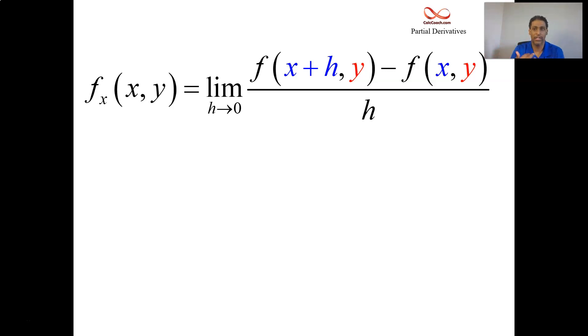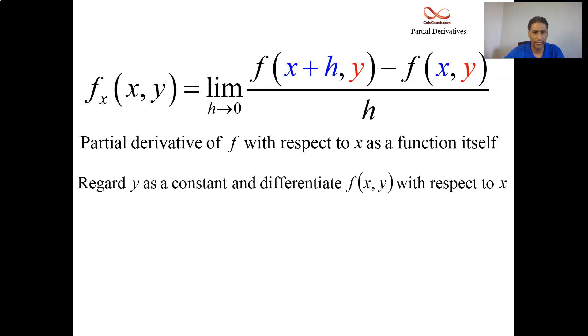The partial derivative looks just like that. There is the f(x+h), there is the minus f(x), but there's this other variable there, it's y. But what you do is in taking the derivative, you hold that variable constant. You treat y like a constant and you differentiate with respect to x.